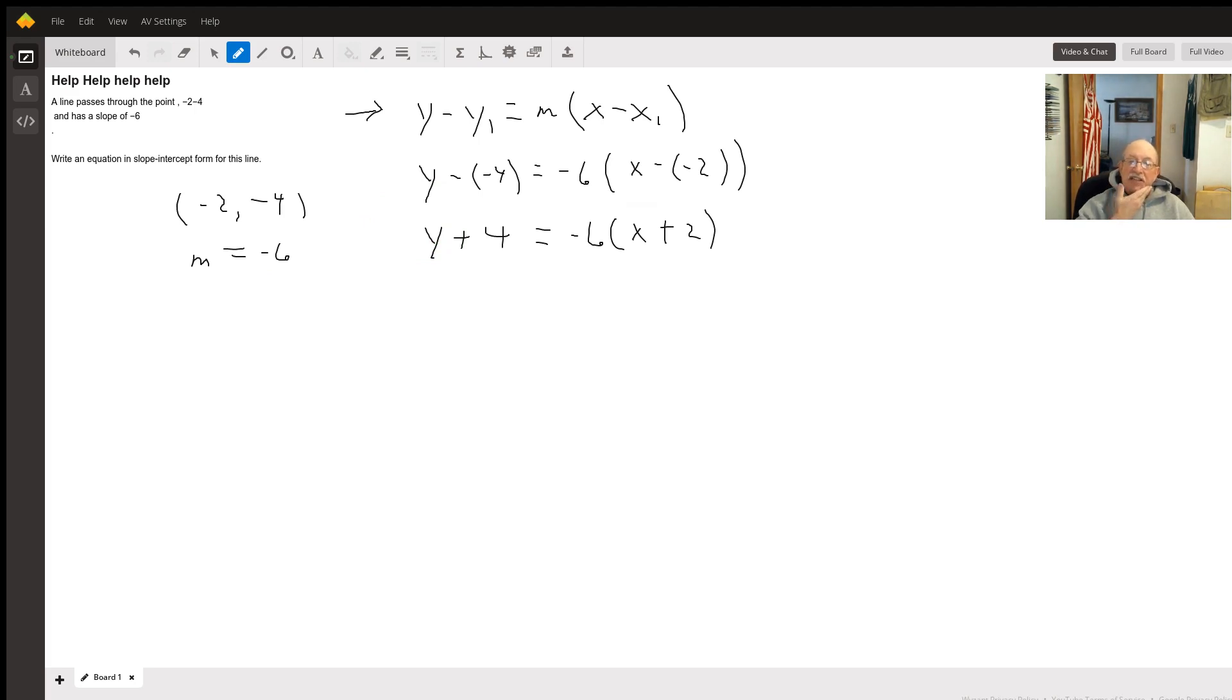I just wrote that in there to show what we're doing, because if I was doing this problem I would have went right to this step: y + 4 = -6(x + 2).